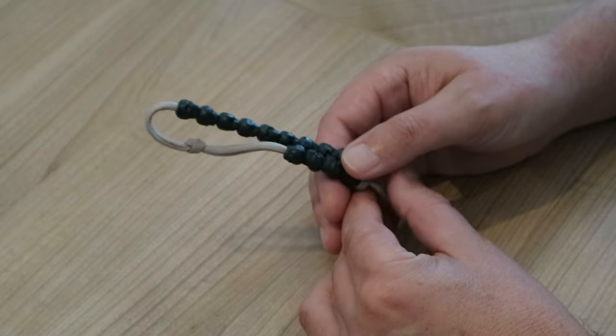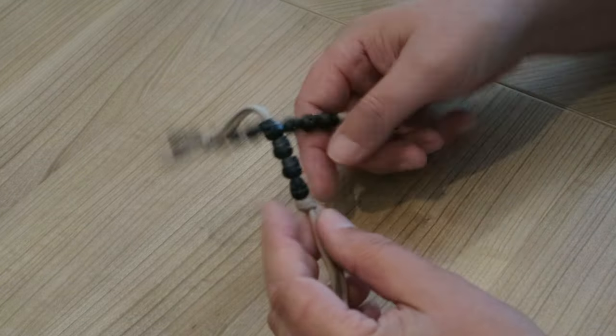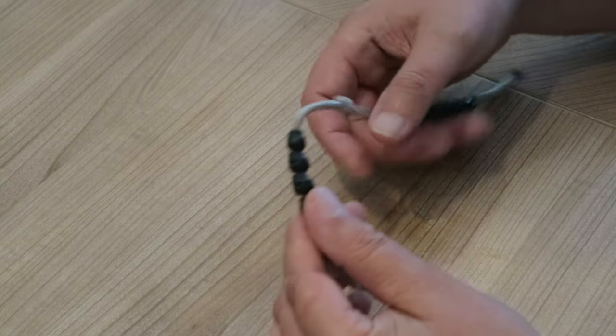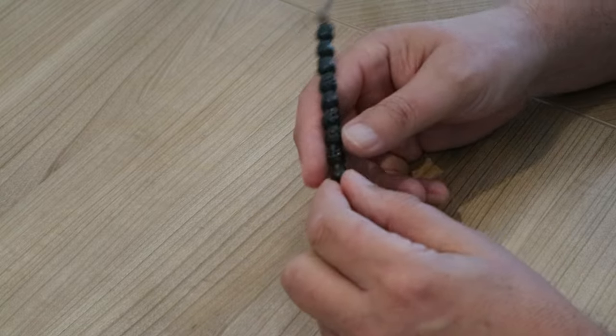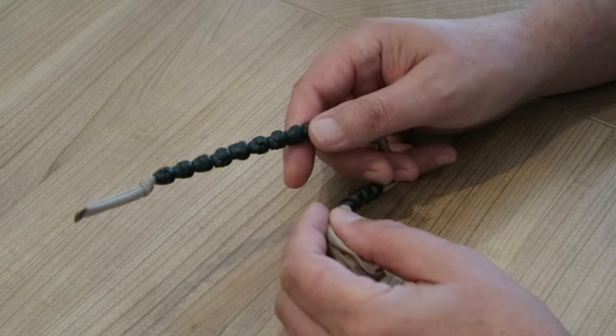But it doesn't have to be beads. You can also put, let's say, four sticks in your pocket, four little sticks and nine rocks, or marbles or whatever, as long as you can identify them.